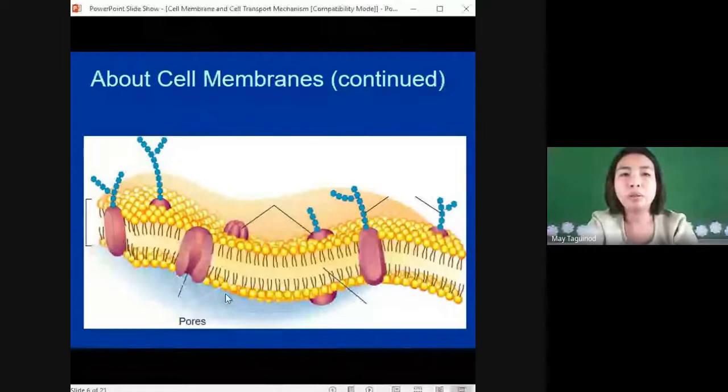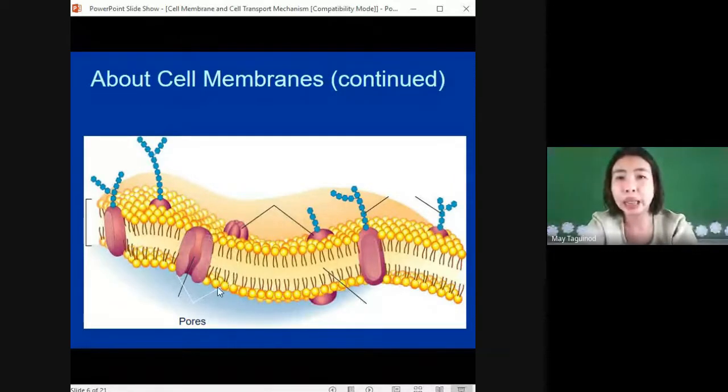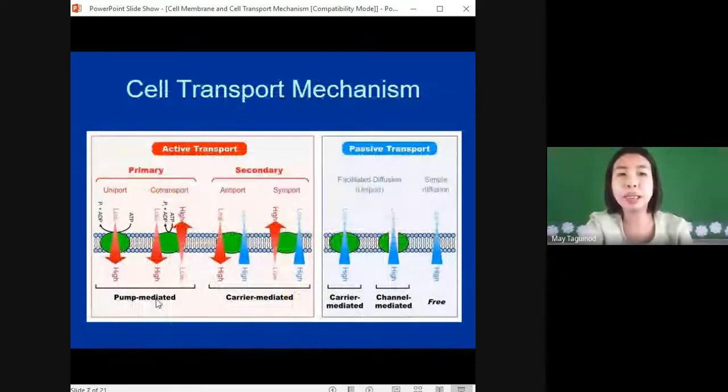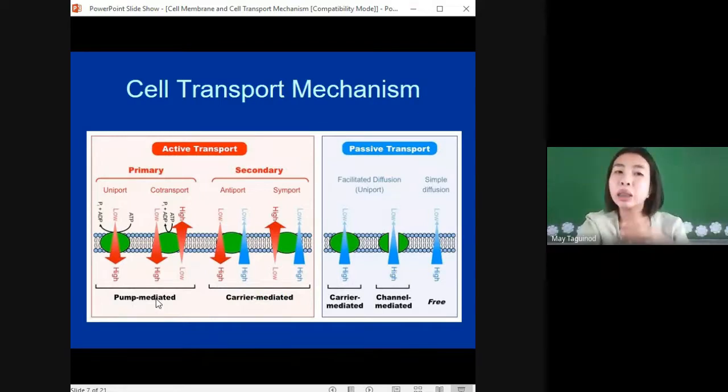As you have observed in this picture, the cell membrane has pores or holes in it. That's why they are called selectively permeable because they allow some molecules to go in and keep other molecules out. So basically the structure helps it be selective. Let's proceed with the cell transport mechanism. Cells need to take in things they need and get rid of things they don't need. We have two main types of cell transport mechanisms.